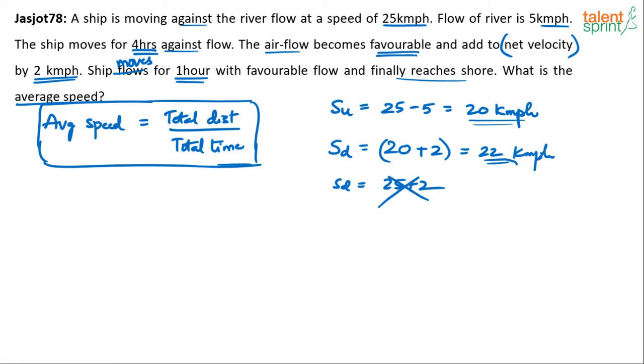See usually we say downstream speed is speed of the ship plus the speed of the stream or airflow. Already the ship was moving at 25. The flow of river is 5. So upstream speed is very simple, 25 minus 5, 20. The ship was running at this speed for 4 hours. The airflow becomes favorable. Airflow becomes favorable meaning it's not the river flow.